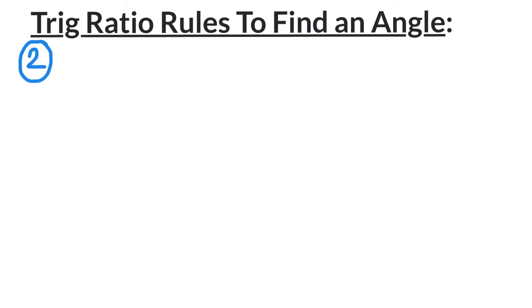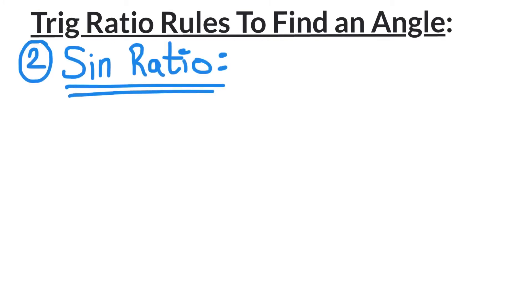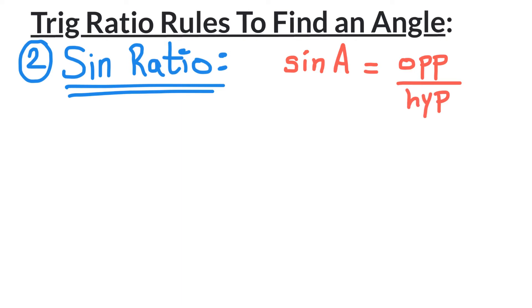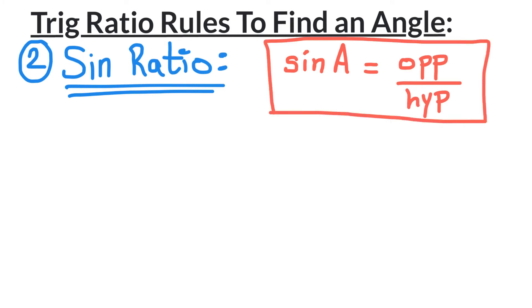Now let's look at rule number 2: the sine ratio of an angle. The sine ratio of an angle equals the opposite side divided by the hypotenuse.